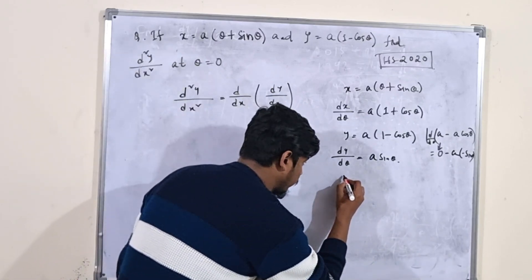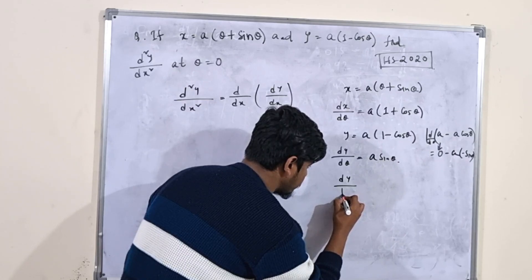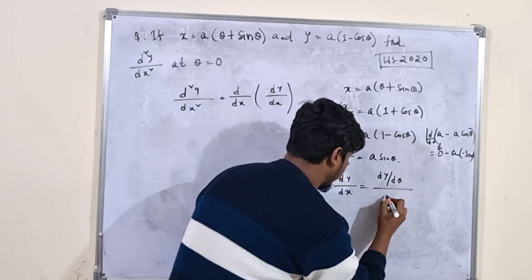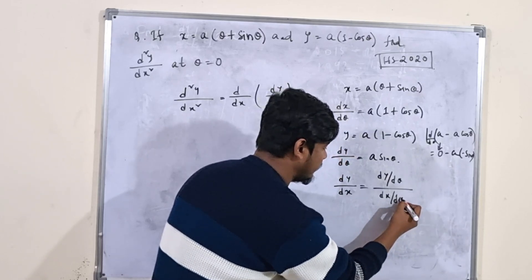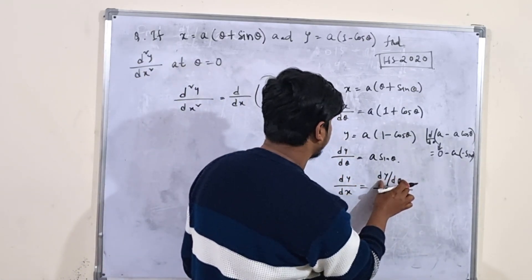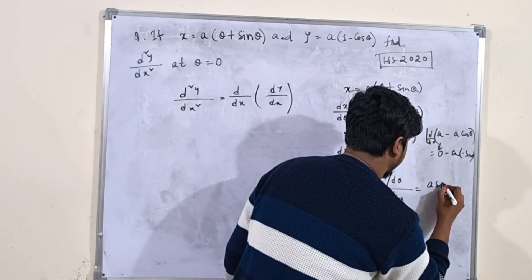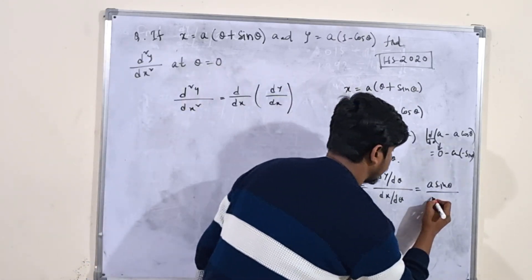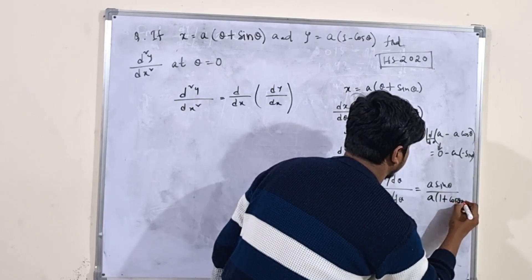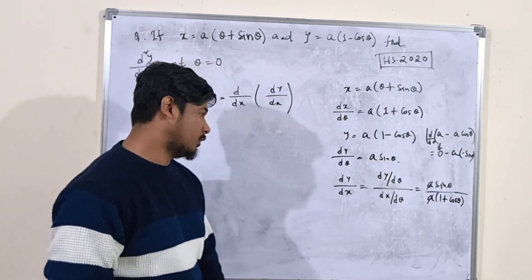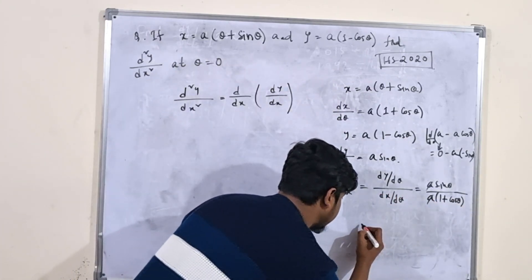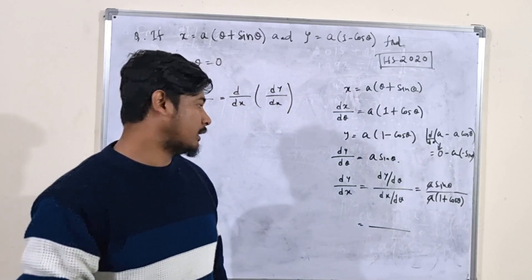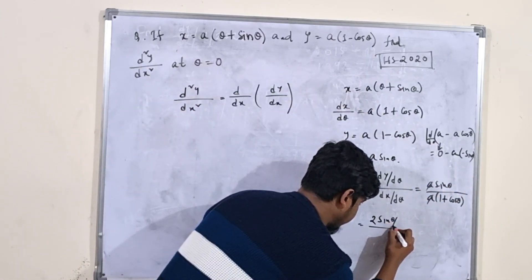Now we need dy/dx. By the chain rule, dy/dx = (dy/dθ) ÷ (dx/dθ), so the dθ terms cancel. This gives us dy/dx = (a·sinθ) / (a(1 + cosθ)). The a cancels, leaving sinθ / (1 + cosθ). We now apply the double angle formula: sinθ = 2·sin(θ/2)·cos(θ/2).